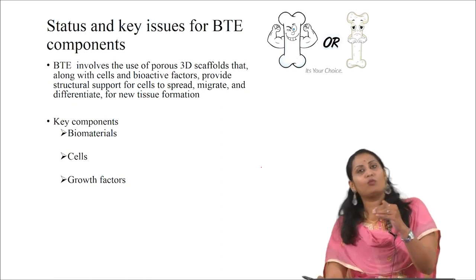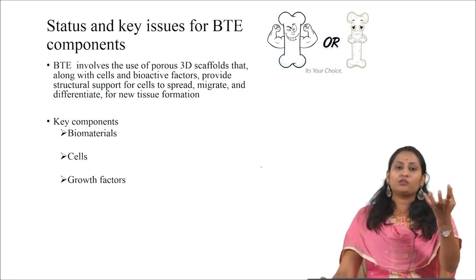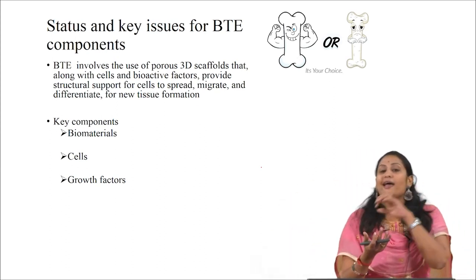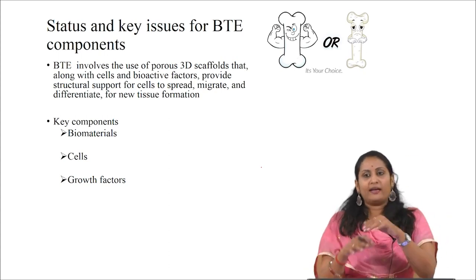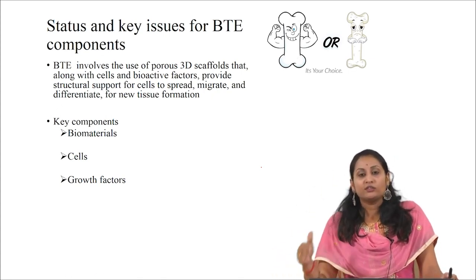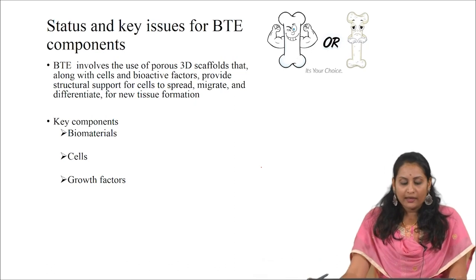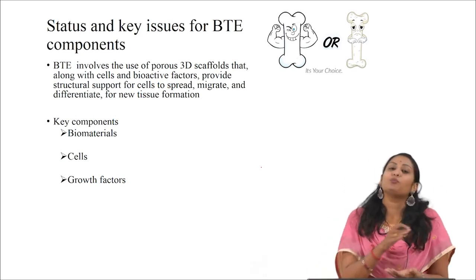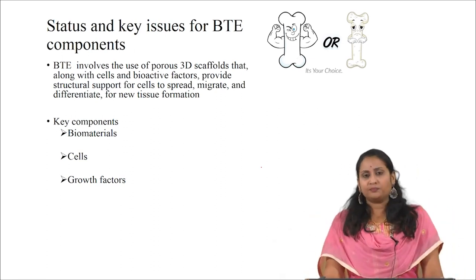In this session we will be dealing in detail about each key component of bone tissue engineering. Bone tissue engineering involves the use of porous 3D scaffolds. The 3D scaffold mimics the extracellular matrix, or in general it acts as the structural template for cells to enter, adhere, proliferate and differentiate, thereby enhancing the formation of new tissue. It should be degradable and it is a temporary implant, not a permanent one. It involves porous 3D scaffolds along with cells and bioactive factors that can provide support for cells to spread, migrate and differentiate for new tissue formation.